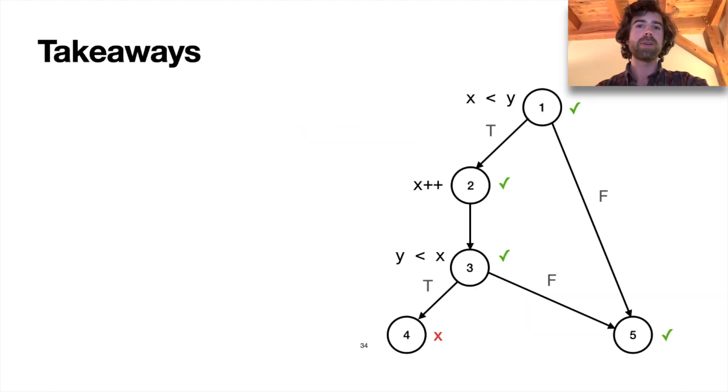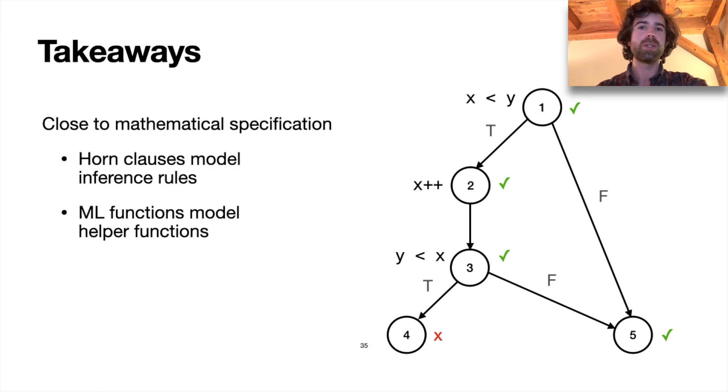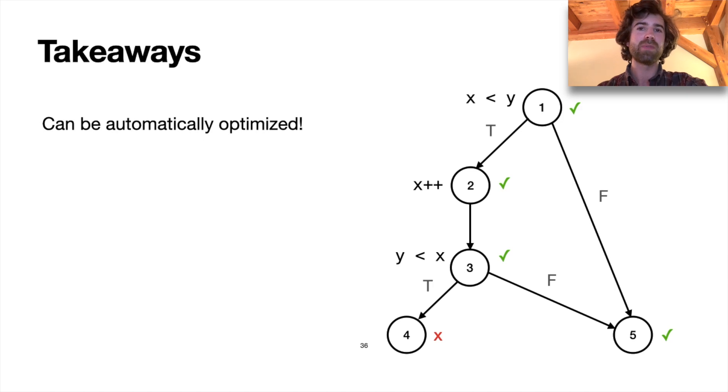So what are our takeaways from this example? Well, one is that we've been able to program in a way that's very close to what a formal specification for symbolic evaluation might look like. For example, one involving inference rules and helper functions.